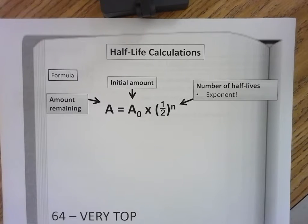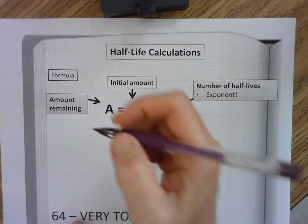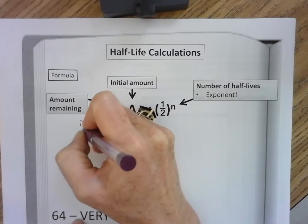This particular formula needs to be at the very top of your notebook, page 64, and there are two things you need to add about this formula. One, it's not in the district packet.